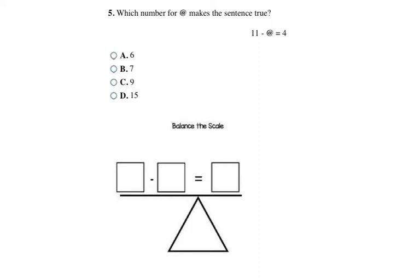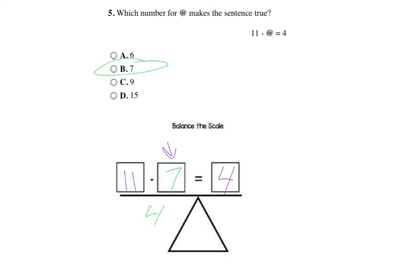Here I'm trying to find out what the at-symbol stands for — what number it represents. Looking at 11 minus some number equaling 4, I can quickly go through the answer choices. Would 11 minus 6 give me 4? No, that gives 5. Would 11 minus 7 give me 4? Yes — so 7 is the number that gives me 4 on both sides, and B is my final answer.